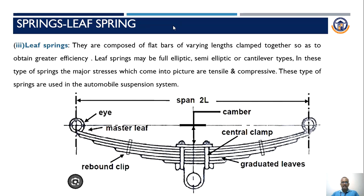The vertical distance between the eye and the master leaf is called camber. The distance from left eye to right eye is called the span, which is twice the half-length, written as 2L.